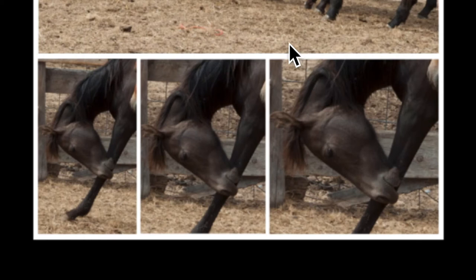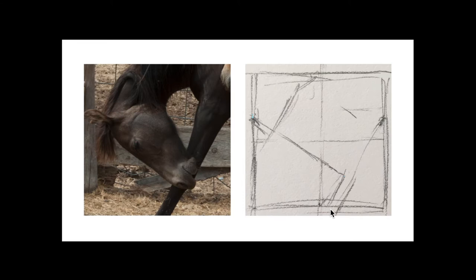As soon as I started blocking in the sketch, I instantly recognized that there was a square theme being developed. You have the format of the canvas picture, which is square, but then there was a secondary square within that first square that I found really intriguing. The other thing I noticed was there was a triangular theme happening just by nature of having a rotated square inside the square.